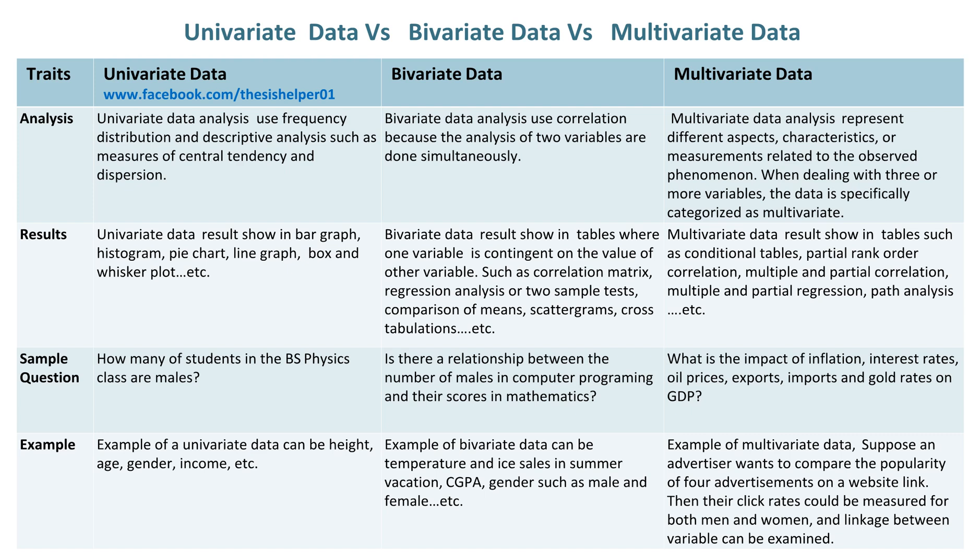Whereas multivariate data results are shown in tables such as conditional tables, partial rank order correlation, multiple and partial correlation, multiple and partial regression, path analysis, etc.